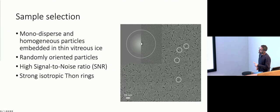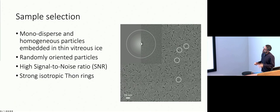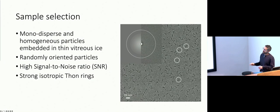When executing a data collection workflow, the first thing we need to do is find a good sample. Generally, assuming you have access to high-end technology, a good sample is one that looks monodispersed and homogeneous, embedded in thin vitreous ice, randomly oriented, and has a very strong signal-to-noise ratio. You want to see the particles and have strong isotropic Thon rings.